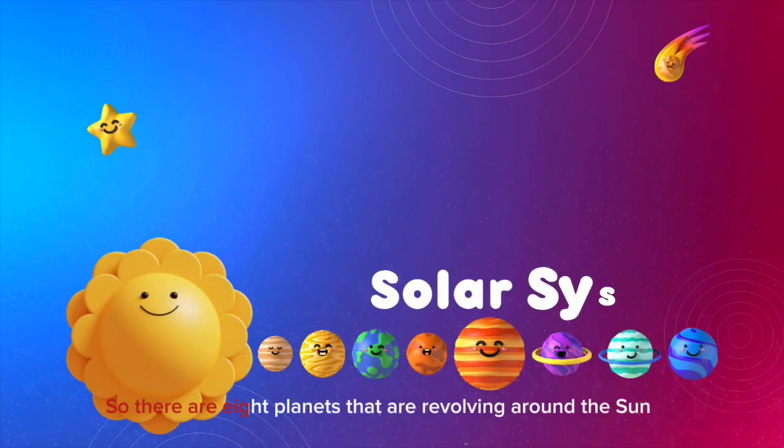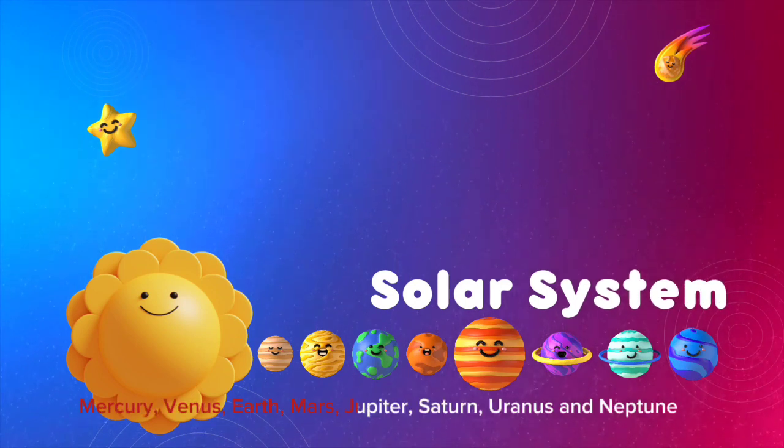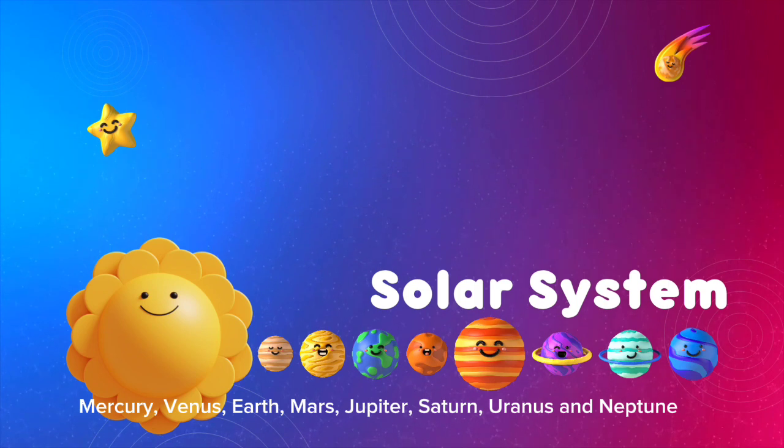So there are eight planets that are revolving around the sun. Mercury, Venus, Earth, Mars, Jupiter, Saturn, Uranus, and Neptune.